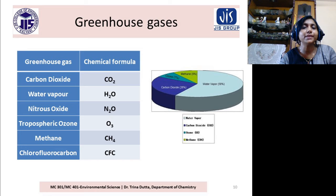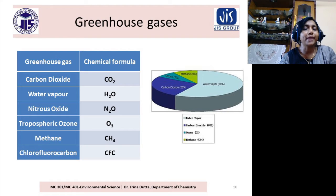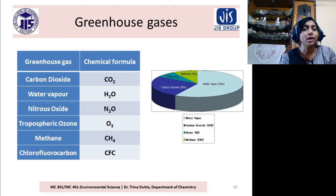These six are the greenhouse gases. They remain in different percentages — that means they contribute in different percentages to the trapping of heat energy. There are many other gases in our atmosphere like O2 and N2, but only these six are greenhouse gases; others are not.